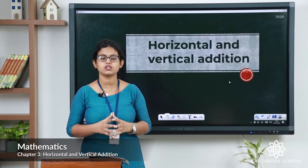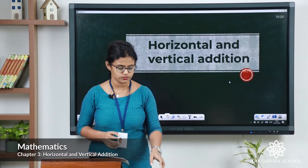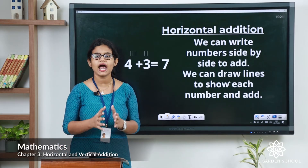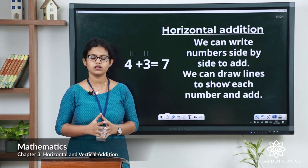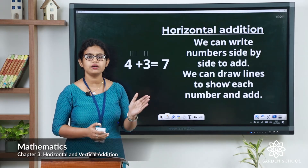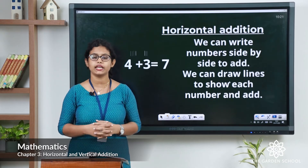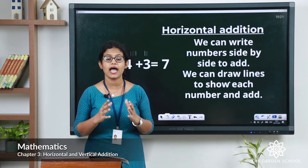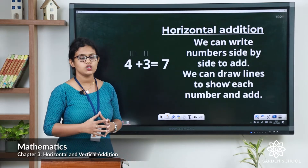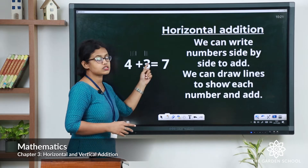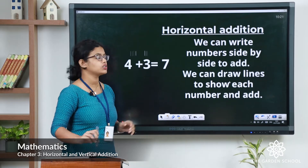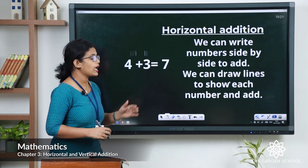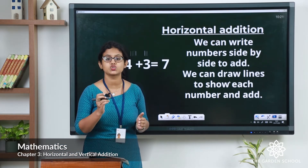Let's see first the horizontal addition. What is horizontal addition? We can add numbers horizontally — we write numbers side by side and then we can add. For that we can draw lines to show each number and then add. See an example here: 4 plus 3, written horizontally, side by side, and on each number you can draw lines.